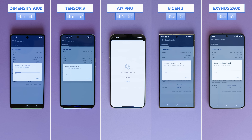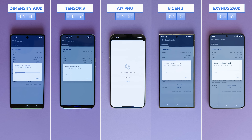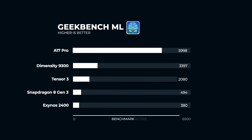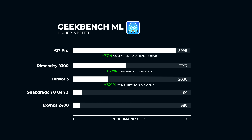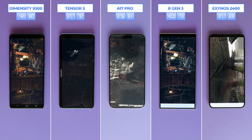Next up is Geekbench ML, a new addition that measures your mobile device's machine learning performance and helps you understand whether your device is ready for the latest ML applications. We chose the MPU test. The A17 Pro ran through these tasks at full speed, being the only one to get almost 6,000 points. Its closest competition, Dimensity, achieved half the score. Tensor gets the bronze medal, and there seems to be a problem with both Galaxy devices — we carried out the test several times and looked through forums but found no explanation. Do you have any idea why?